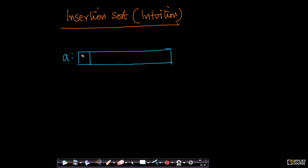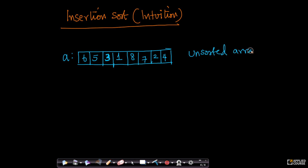I'll take a simple example. Imagine I have an array of values 6, 5, 3, 1, 8, 7, 2, and 4. This is my unsorted array. Now let's assume I want to sort this. Let's understand the intuition behind insertion sort step by step. Then we'll see a nice animation so that you'll always remember it. I'll explain it as if on a blackboard or whiteboard.